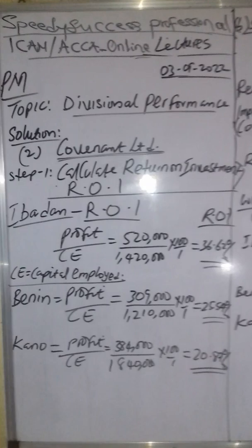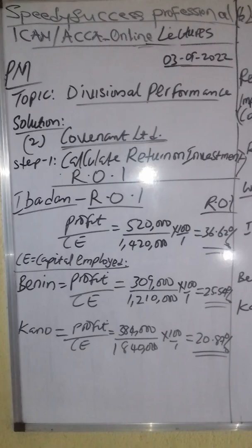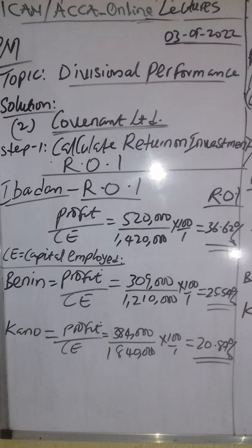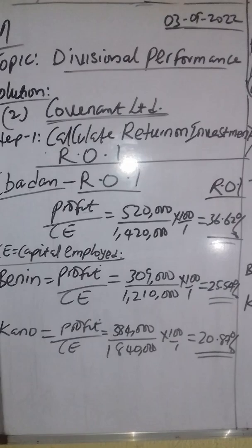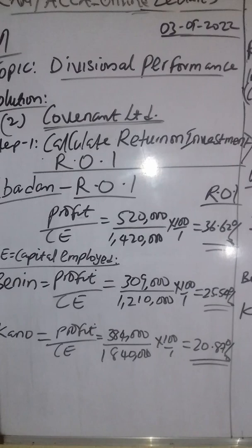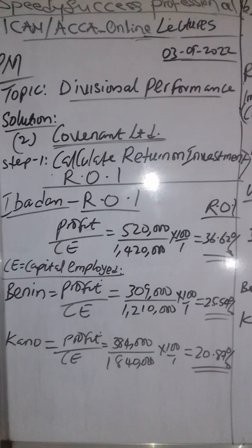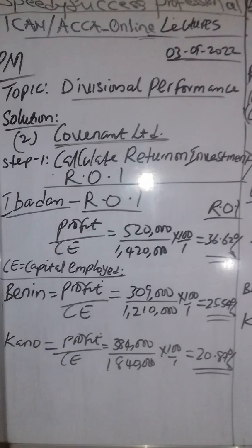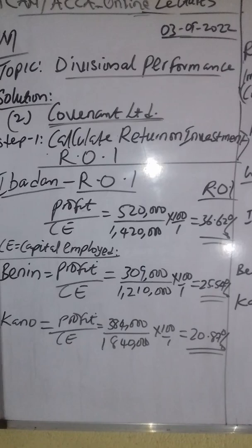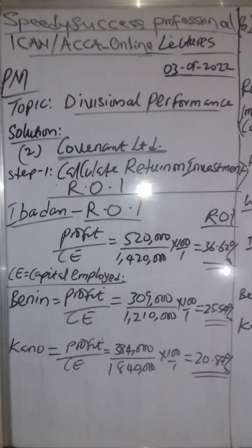For Covenant Limited, the first step is to calculate the return on investment. Ibadan had a profit of $520,000 and capital employed of $1,420,000. The formula for ROI is profit over capital employed times 100, which generates 36.62% for Ibadan. Benin generated 25.54%. Kano: 384,000 over 1,840,000 generated 20.87%.